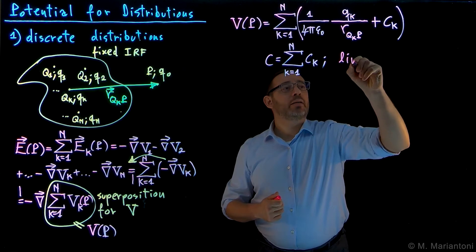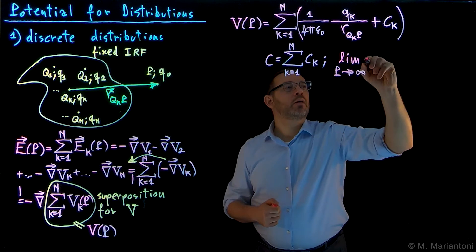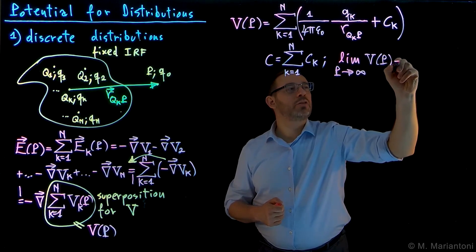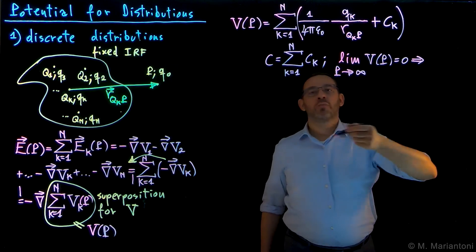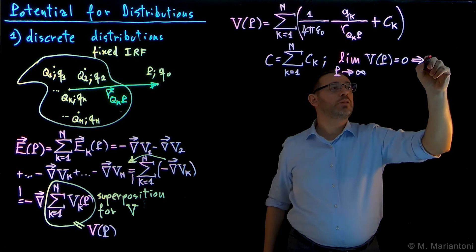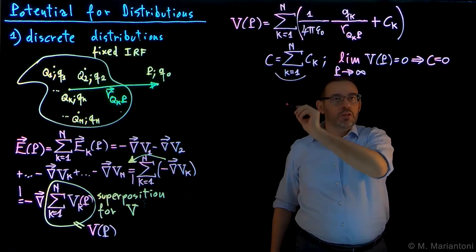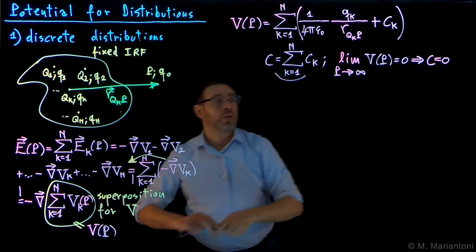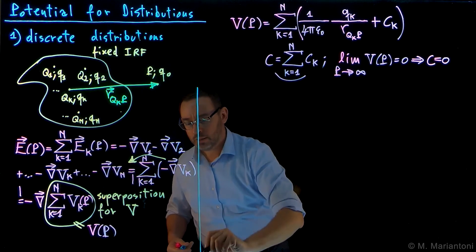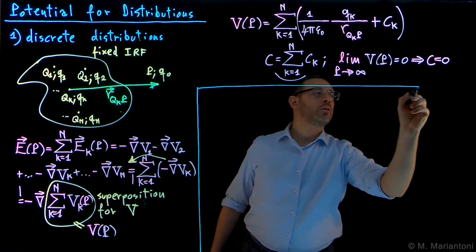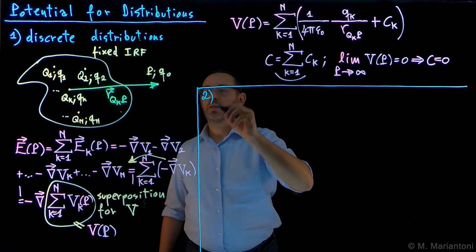If we impose the condition that as P goes to infinity, V(P) → 0 — normal conditions at infinity — this implies that C, defined in this fashion, must equal zero. This holds also in the case of a discrete distribution. Now let us consider another type of distribution: Case 2, which is that of continuous distributions.